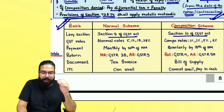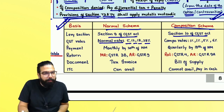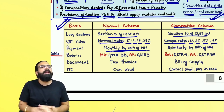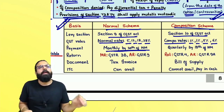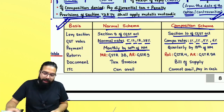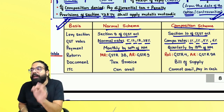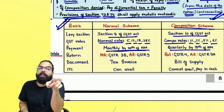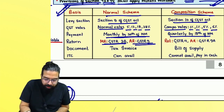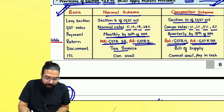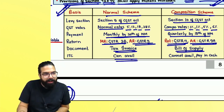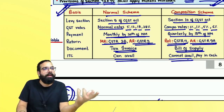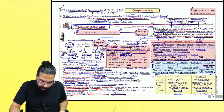Difference between normal scheme and composition scheme: Normal is under Section 9; composition scheme is under Section 10. Normal rates are 5%, 12%, 18%, 20%, 28%; composition is 1%+1%, 5%+5%, and under 10(2A) it is 6%. Normal scheme — file GSTR-3B by the 20th of the next month; composition dealer files quarterly — an intimation in CMP-08 — then annually files GSTR-4 by 30th April. Annual return under normal is GSTR-9; under composition it is GSTR-9A. Normal scheme issues tax invoice; composition dealer issues bill of supply. Normal scheme — you can take ITC; composition dealer cannot take ITC. Whatever the composition dealer has to pay — 1%+1%, 5%+5%, or 6% — everything has to be paid in cash only.